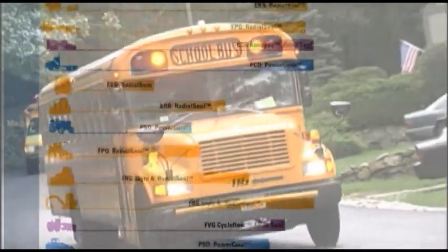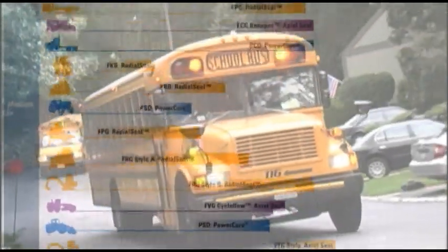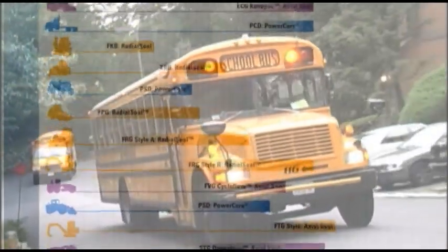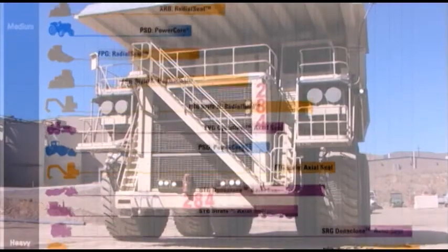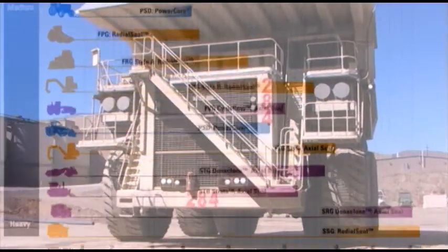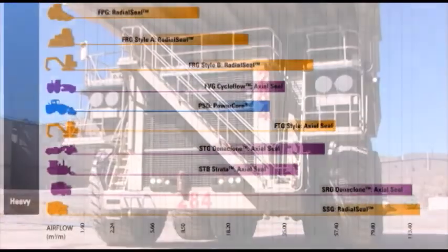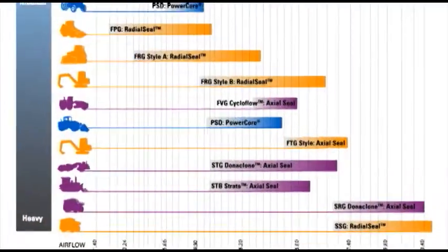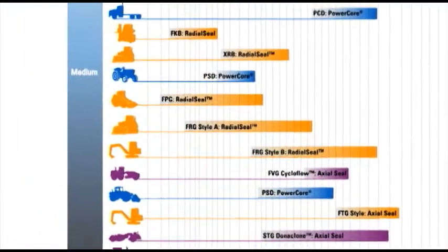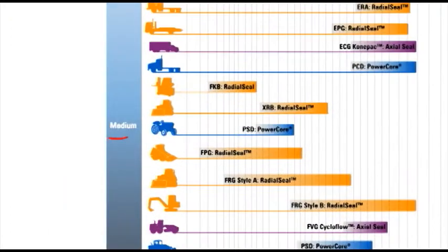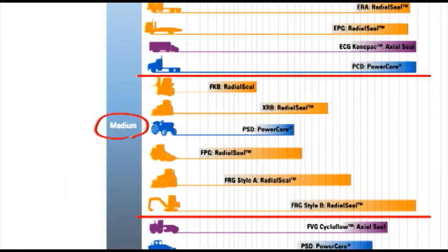The selection chart ranges from on-highway trucks, buses, and boats on the light dust side, to heavy-duty earth-moving equipment and mining vehicles on the heavy dust side. For this example, we'll assume that your vehicle operates in a medium dust environment.